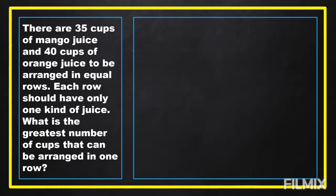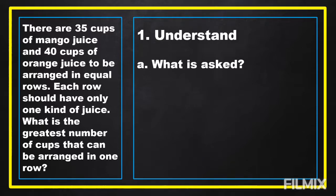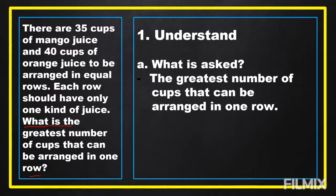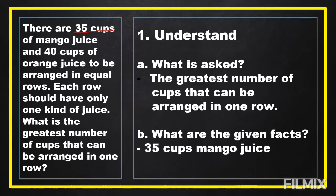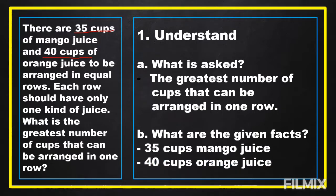To answer our problem, we're going to read it twice in order for us to understand. We should answer what is asked in the problem. In our problem, it is asking for the greatest number of cups that can be arranged in one row. Then we should know what are the given facts in the problem. Looking back to our problem, the given are 35 cups of mango juice and 40 cups of orange juice.